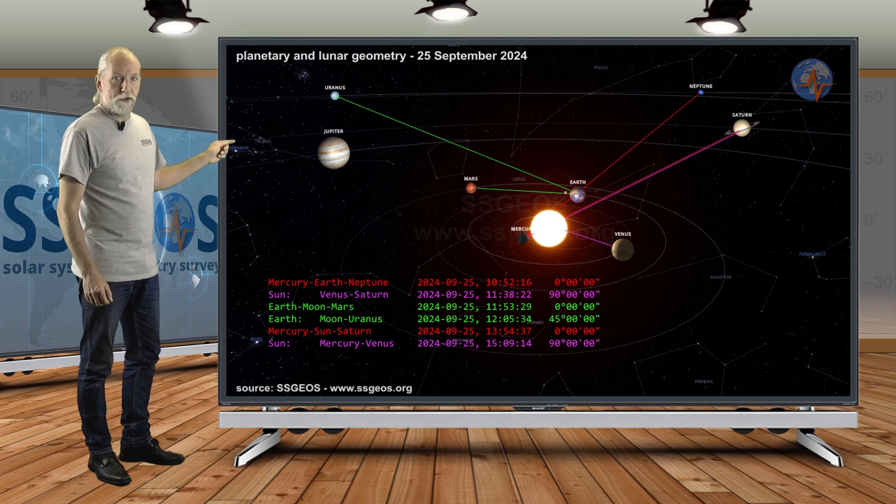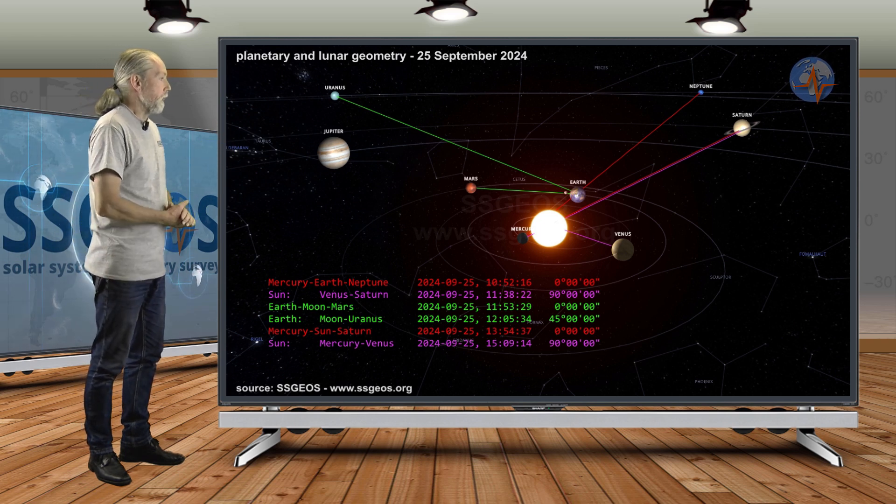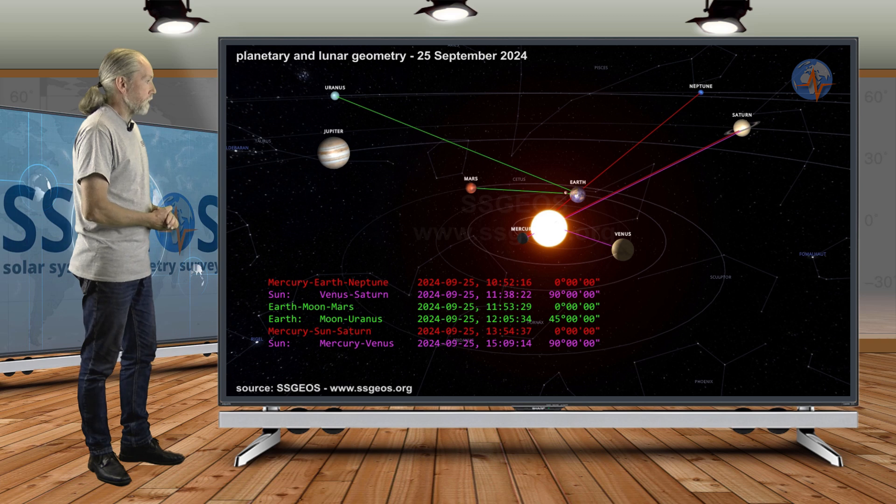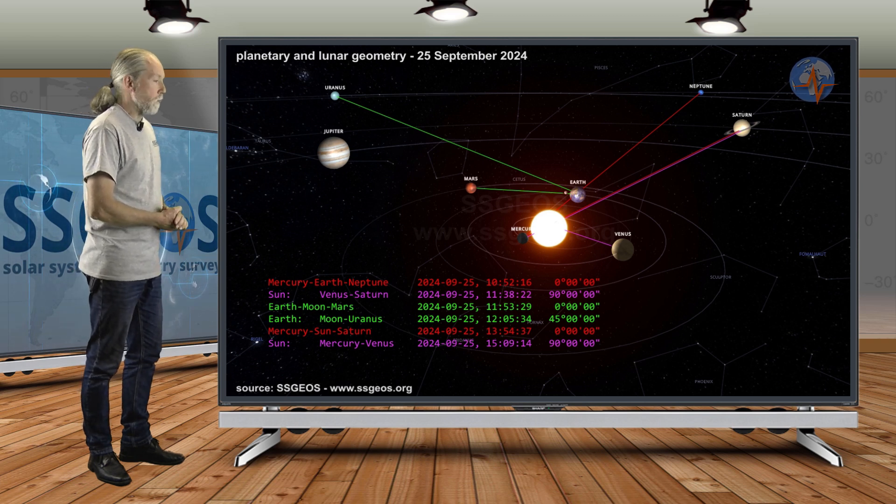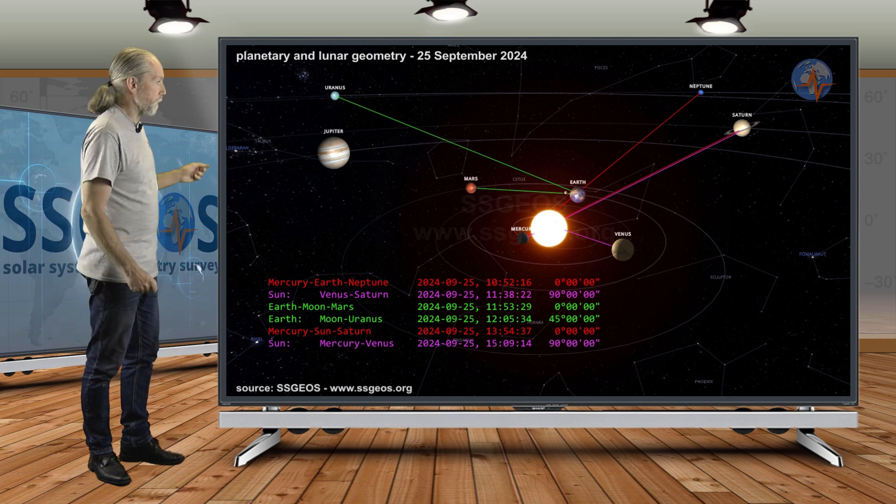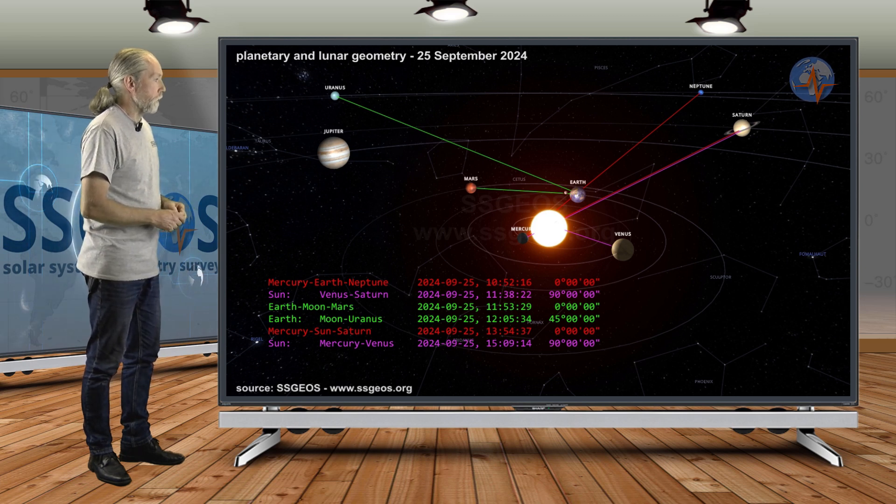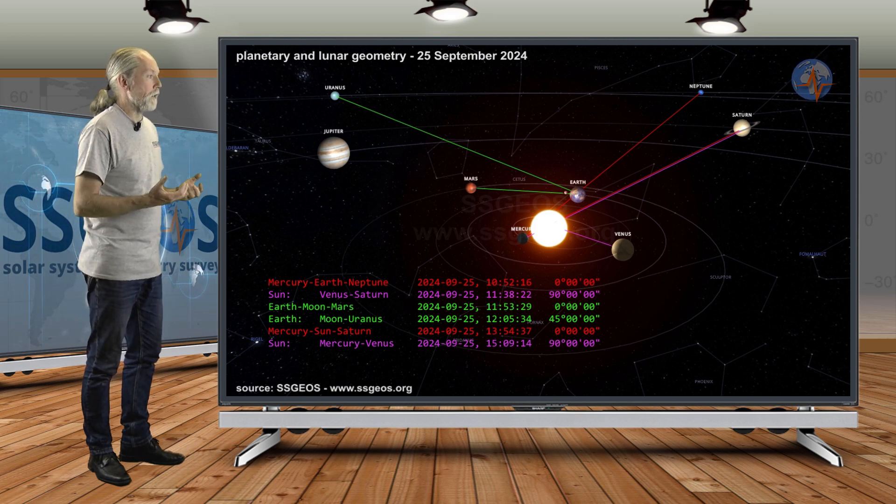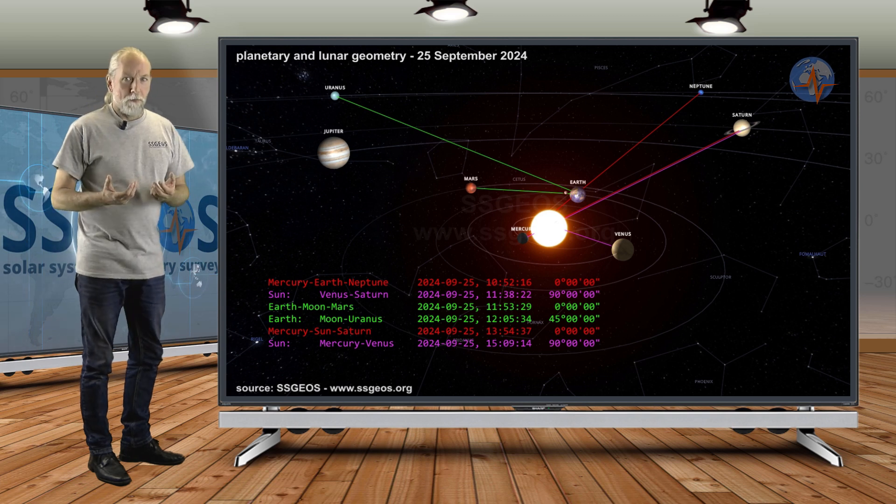That's followed by right angle geometry Mercury-Sun-Venus-Saturn. And then we have the lunar geometry: that's Earth-Moon-Mars the conjunction, and then Earth-Moon-Uranus in a semi-right angle geometry, and that actually happens practically at the same time.